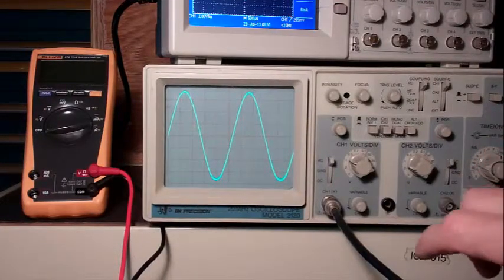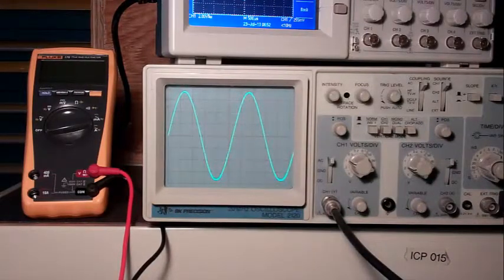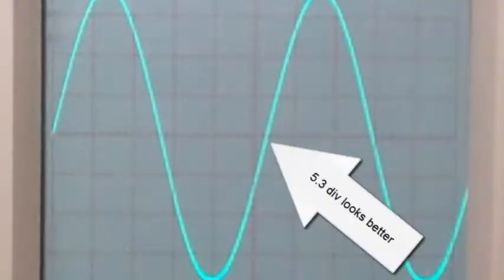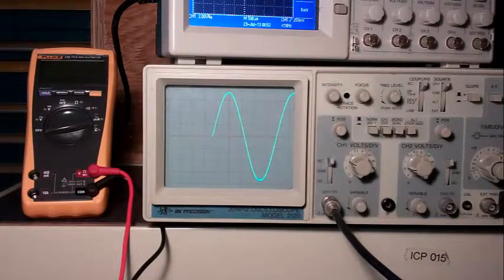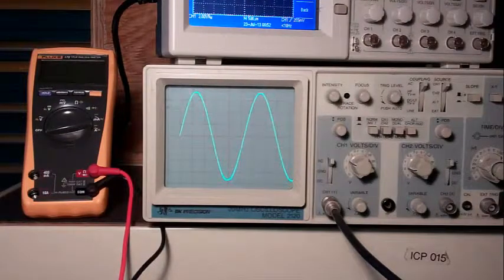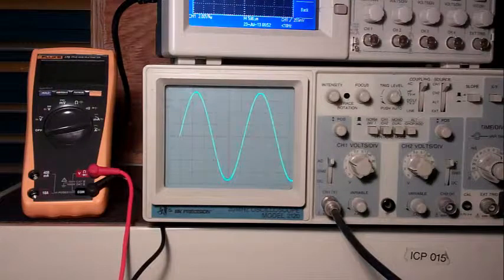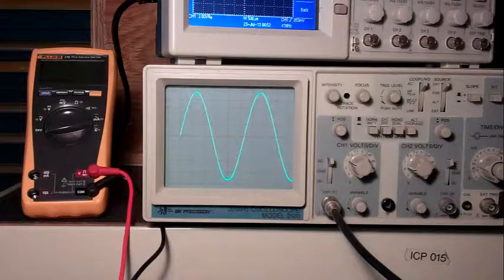So the current measurement is 5.4 divisions for the period, and the amplitude is 3.6 up and 3.6 down. So the amplitude is 3.6 divisions.